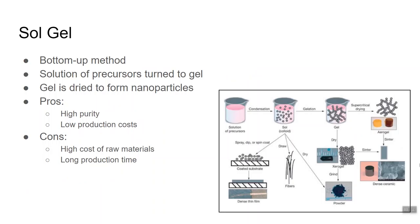Sol gel. This is a bottom-up method, which means that the process creates particles from atoms and molecules. The process begins with starting materials called precursors in a solution, and next the solution undergoes hydrolysis and condensation reactions to form a gel. Then the gel is aged and dried to form a crystalline material. This can take a long time.